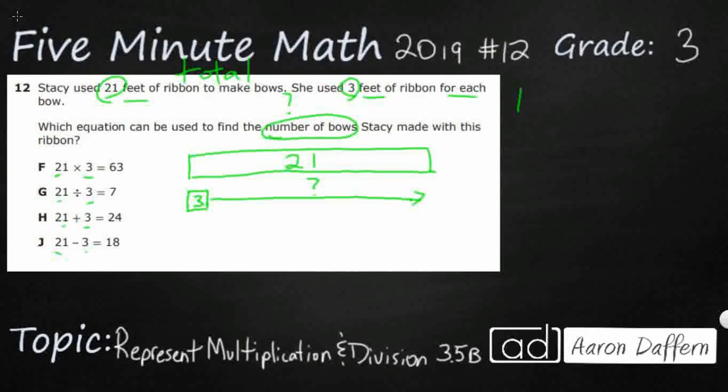So what we could do is we can just set up 21 feet. I'm just going to count them out: 1, 2, 3, 4, 5, continuing through all 21. These are going to represent my 21 feet.